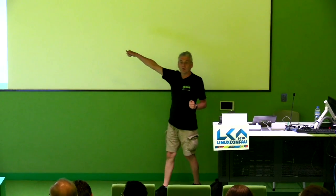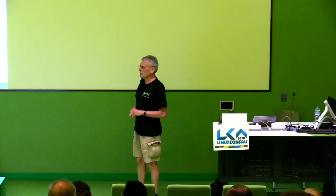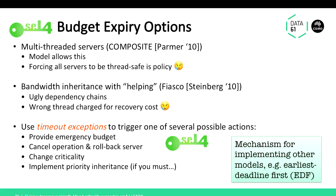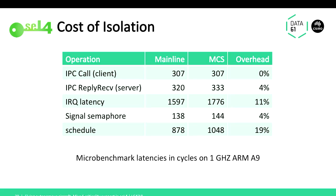The same mechanism can be used to implement different scheduling policies at user level. At the moment we have priority-based scheduling, which industry is happy with. Academia dislikes it because you can't utilize the system more than about 70%. But we can actually implement EDF on top at user level for those who really want it.